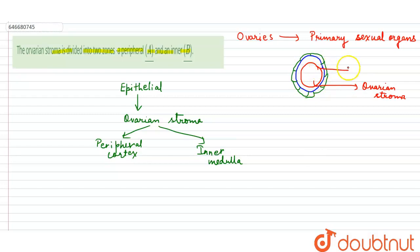And its peripheral part, suppose this one is the peripheral part, this peripheral part is the cortex and the inner part is the medulla. So here we get our answer: A is the peripheral cortex and B is the inner medulla. Thank you very much.